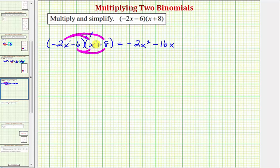Negative six times x is negative six x, so we'll write minus six x. And for our last product, we have negative six times positive eight, which is negative 48, so we'll write minus 48.